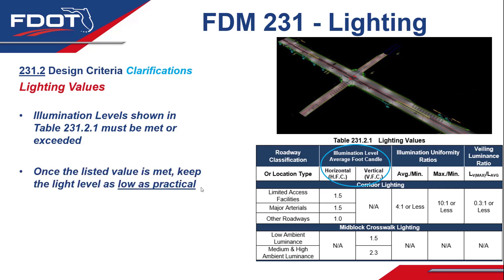The new revision also explains that once the listed value is met, the idea is to keep the light value as low as practical. Feedback from the districts indicated that designers would sometimes do just one iteration in the design, resulting in significantly higher values than what are shown in the table. The values shown are the targets we want to meet but stay close to. The values are already fairly bright compared to national criteria and already include light loss factors, so we do not want to add excessive brightness and glare out of convenience in the design phase.